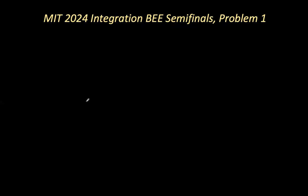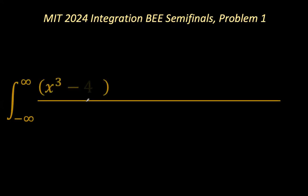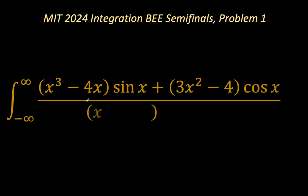So the problem of focus is a definite integration from negative infinity to positive infinity of: x³ minus 4x times sin(x), plus, in bracket, 3x² minus 4 times cos(x), all over x³ minus 4x² plus cos²(x). Interesting problem.